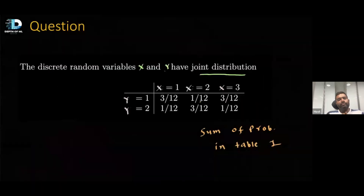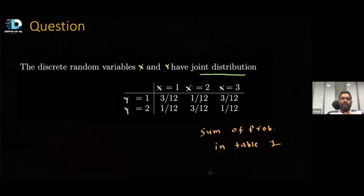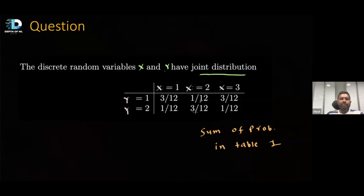When we talk about conditioning, conditioning with respect to a certain event uses the probability of that event. Since the random variable takes multiple values, I can write a conditional distribution of Y given X=1, Y given X=2, and Y given X=3. Or the reverse: X given Y=1, X given Y=2, etc.